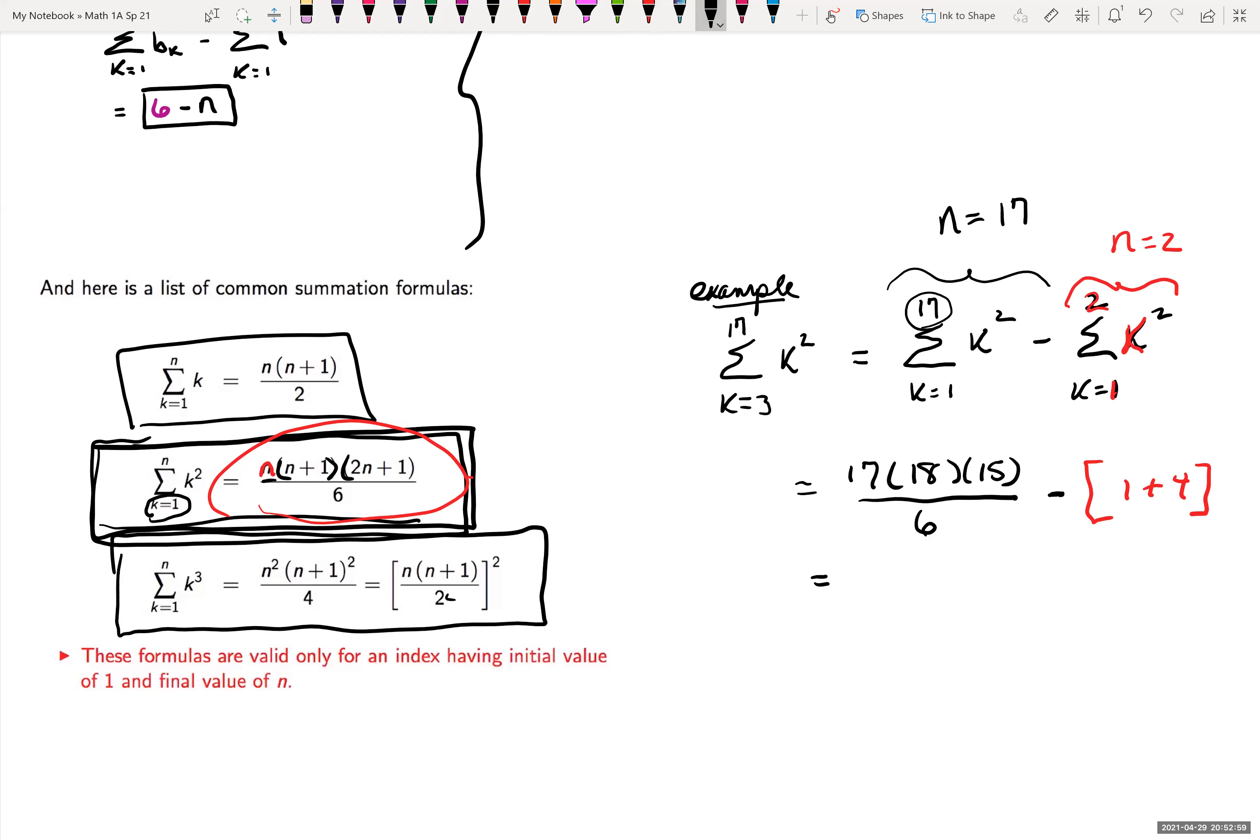So this is equal to. So I noticed on my top, my numerator, 17 times 18 times 35. Well, 18 has six in common with a denominator. So I can just simplify this a little bit. So I have three times 17 times 35.